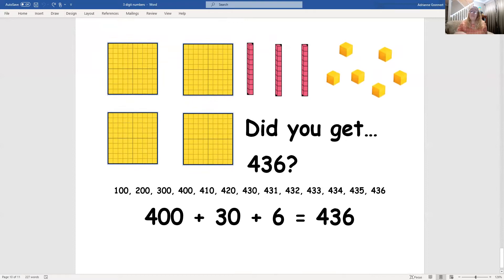Did you get 436? Great. There are four hundreds, three tens, and six ones for this number. We count that out like this. 100, 200, 300, 400, 410, 420, 430, 431, 432, 433, 434, 435, 436. 400 plus 30 plus 6 equals 436.